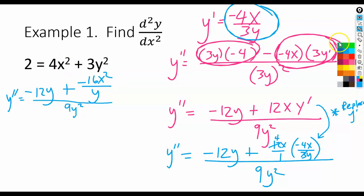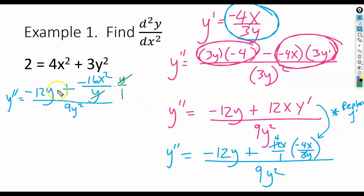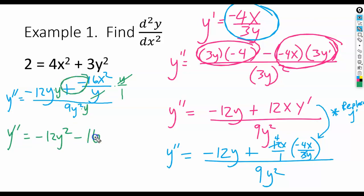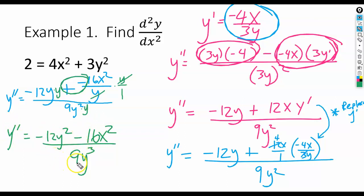Now we have a fraction inside a fraction — a situation we've seen before. The way we deal with that is to multiply the fraction by the denominator. So I'm going to multiply by y over 1, so those y's cancel. Whatever you do to one term, you do to all terms. As a result, y'' equals negative 12y squared, minus 16x squared, with no more y in that denominator. Down in the other denominator we have 9y cubed. This is our final answer — I don't think it's reducible.